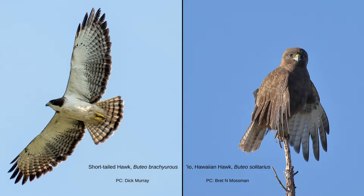Over 700,000 years ago, short-tailed hawks strayed from their migration to South America and colonized the Hawaiian Islands, where they evolved over time into today's Hawaiian hawk that we call EO.